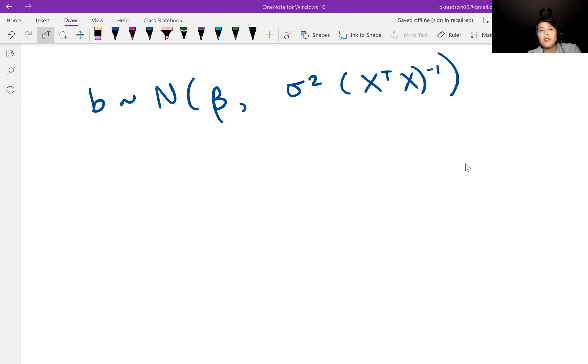So that was for the entire vector B. Now we're just going to look at one component, the J-th component of it.